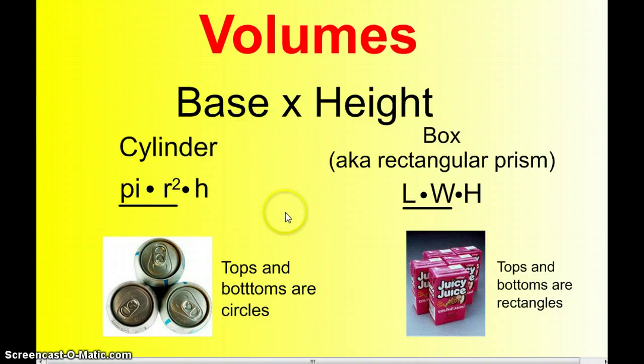It's always base times height. If you look at a cylinder, you'll notice that the top and the bottom of a can is circular. For circles, we know we need to use pi r squared. We simply multiply that by the height and we'll have the volume.